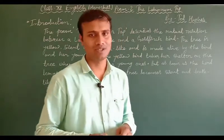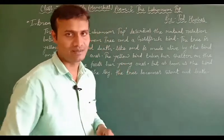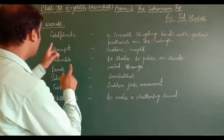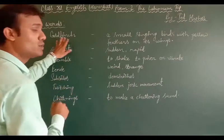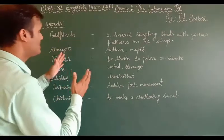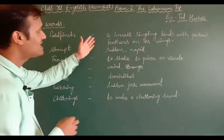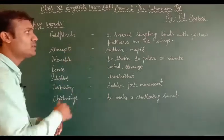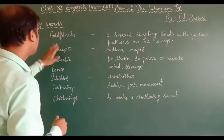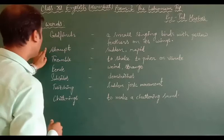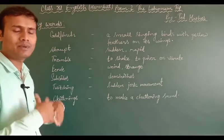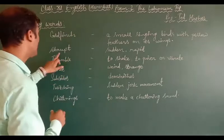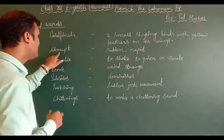Now let's look at some selected keywords. The first word is 'goldfinch' — a small singing bird with yellow feathers on its wings. The next word is 'abrupt', which means sudden or rapid movement.